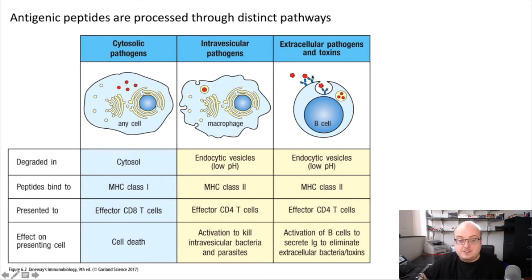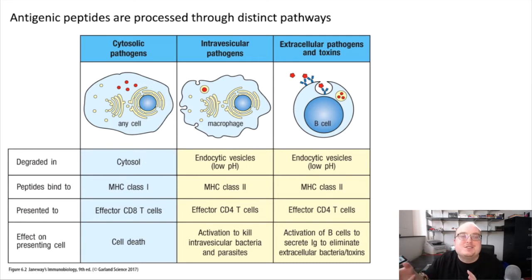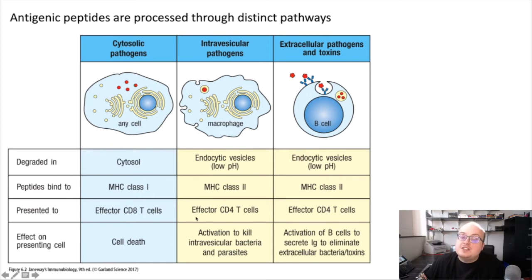This is in contrast to other types of pathogens, like those found within vesicles. These are things that are either phagocytosed or make a vesicular structure when they infect the cell, but they're not in the cytoplasm — they're separated from the cytoplasm by some kind of vesicular structure. They're going to be broken down within endocytic vesicles, meaning the phagosome, lysosome, endosome, and other vesicular structures. These intravesicular pathogens get broken down inside the vesicular system and end up being routed more often to MHC class 2.